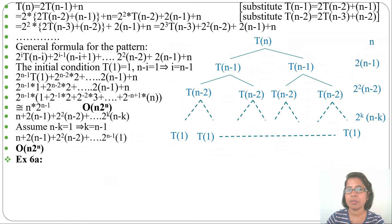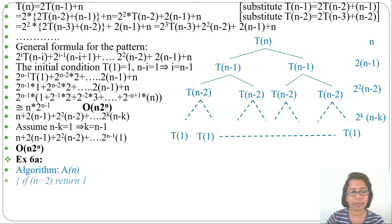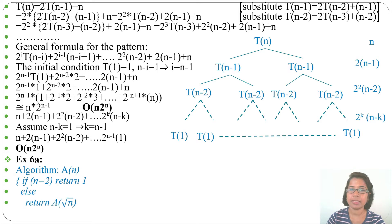Let's discuss some more examples of analyzing recursive algorithms. I already discussed how to analyze decrease-and-conquer recurrence relations. Let's discuss: if a recurrence relation contains a root function, then how will we analyze it? Algorithm: if n equals 2, return 1; else return a(√n) — this is a recursive call — then function b.